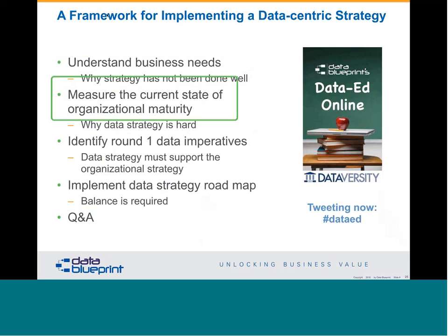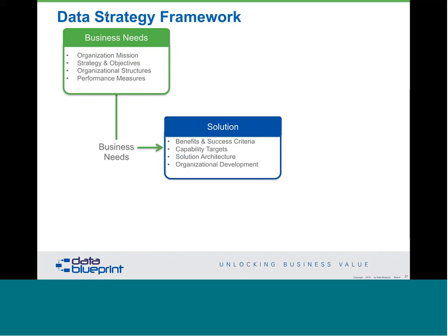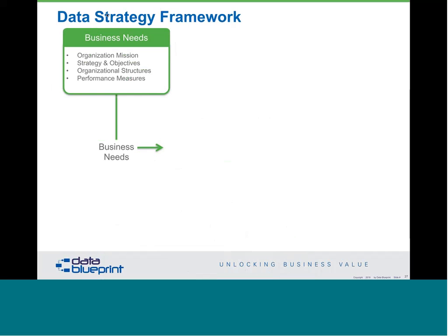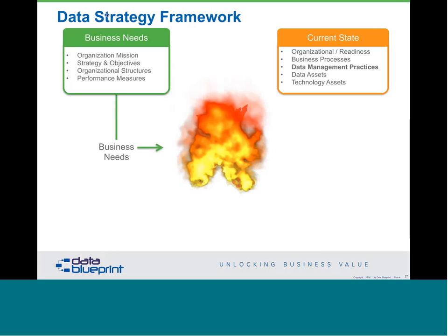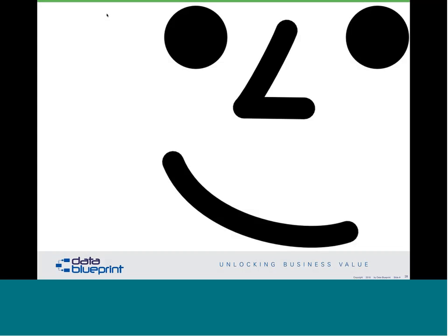Let's move now from understanding business needs to getting the current state of organizational maturity, and why data strategy has been kind of hard. Out of business needs, everybody says 'great, then I should come up with a solution' — and I'm sorry to tell you that is absolutely wrong. Most organizations try this and fail miserably. What we'd really like to do is look specifically at the current state of readiness — not just your data management group, not just IT, but the organization as a whole. If we don't understand what the organization is capable of, we have no ability to hand it the right set of tools, techniques, people, process, and technology.